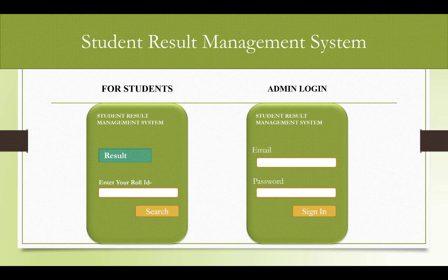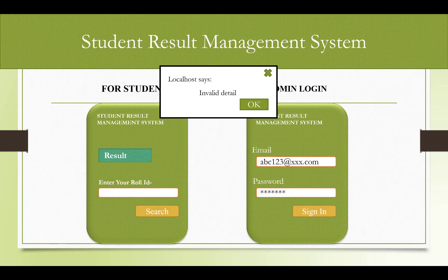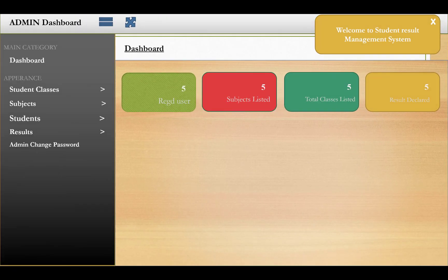The admin can log in using their email ID and password. If credentials are not valid, a pop-up will appear saying 'Invalid Details'. If your admin details are correct, you will be logged into the system. This is the default admin dashboard showing registered users, subjects listed, total classes listed, and results declared.